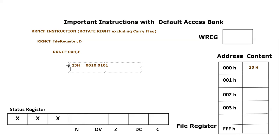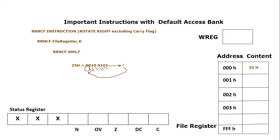We are going to rotate it towards the right, meaning the LSB (1) will come out. The other bits will shift over, and there will be a vacant place on the left. The bit coming out will go back into that vacant place on the most significant bit side. This is why it is known as a rotation instruction — you are rotating the values of a file register towards the right.